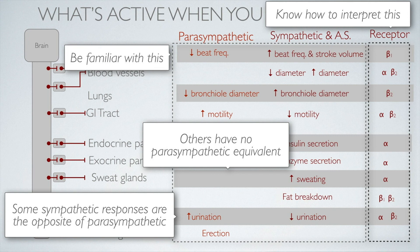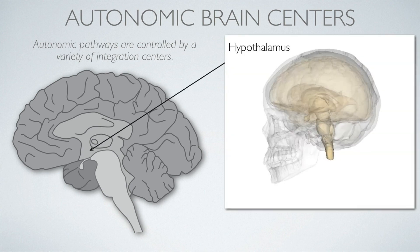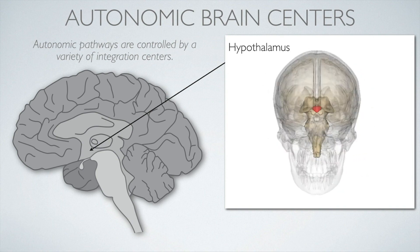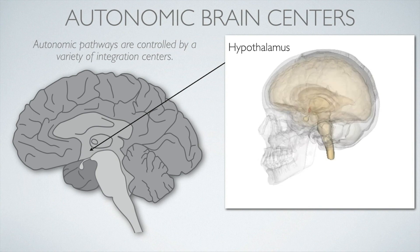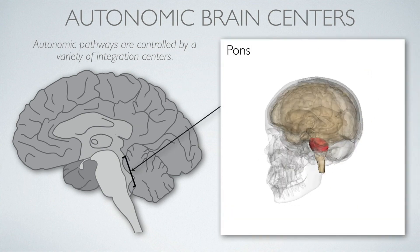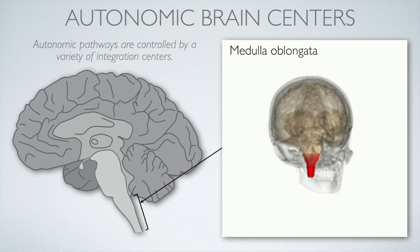That provides the big picture on the three major components of the autonomic nervous system. Although all those pathways reside in the periphery, they are activated by the central nervous system. Autonomic pathways are controlled by a variety of integration centers, including the hypothalamus — which I've already mentioned in thermoregulation, visible in a CT scan as a small heart-shaped piece of the brain associated with the anterior pituitary. The other major centers are in the brainstem, including the pons and the medulla oblongata, positioned more ventrally on the brainstem.